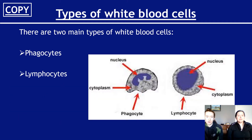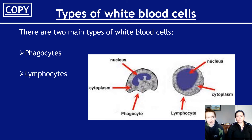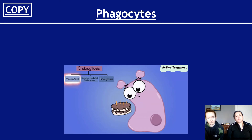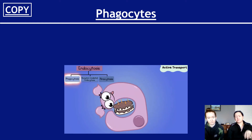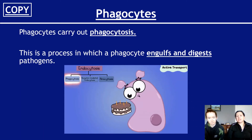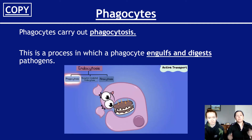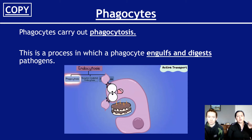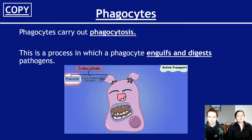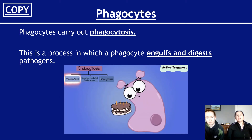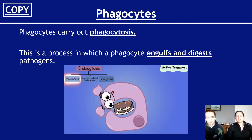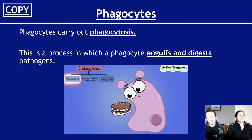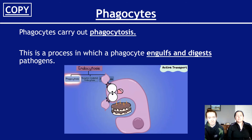In terms of the types of white blood cells, you need to know there are two main types. You don't really need to know the difference in the diagram, but it shows that the nucleus is slightly different and the shape is different. You literally just need to be able to name the two types and say what they do. The two types are called phagocytes and lymphocytes. Phagocytes engulf stuff, as seen in this little gif here - the pink thing is representing a phagocyte. So phagocytes carry out phagocytosis, which is the process in which a phagocyte will blob up to something like a pathogen, like a bacterium, and essentially absorb it into its own body and then break it down. Important language point: we do not say that the phagocyte eats other pathogens - you have to say it engulfs and then digests the pathogen.